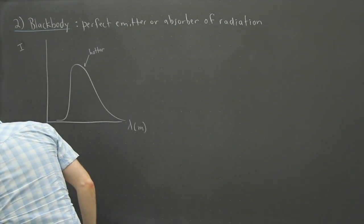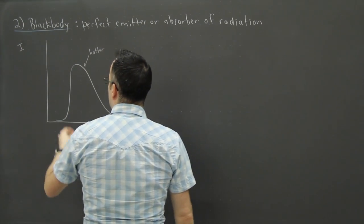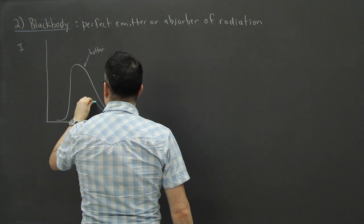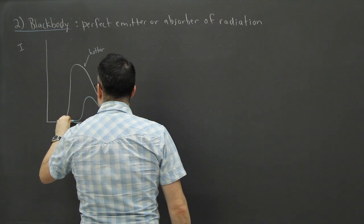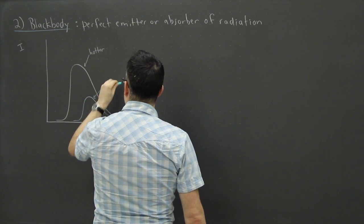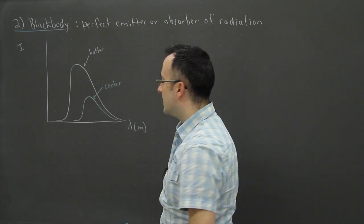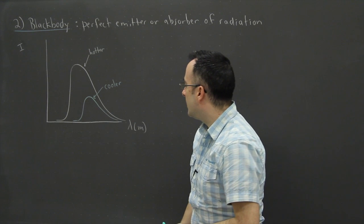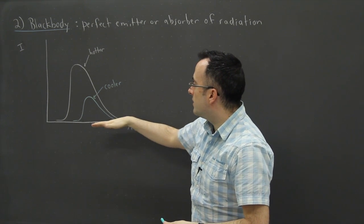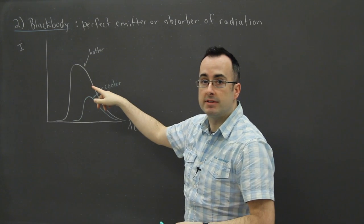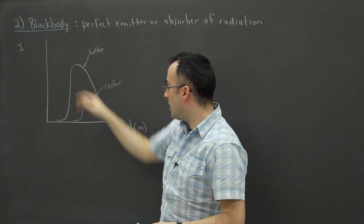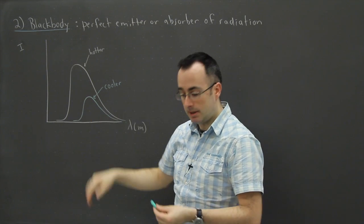Now what if I take something like this and compare that curve to another one of an object that's maybe a little bit cooler. So maybe it goes like this, something that's actually not as warm. What we can look at then is each of these curves has a peak intensity and each of them has a wavelength associated with that peak.